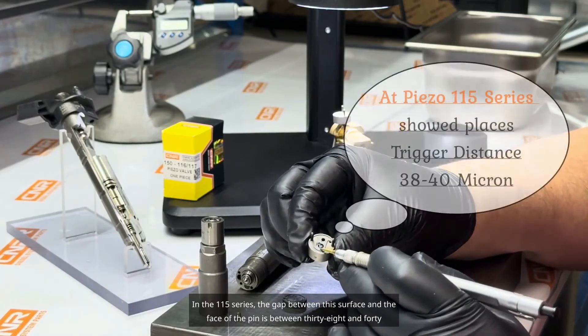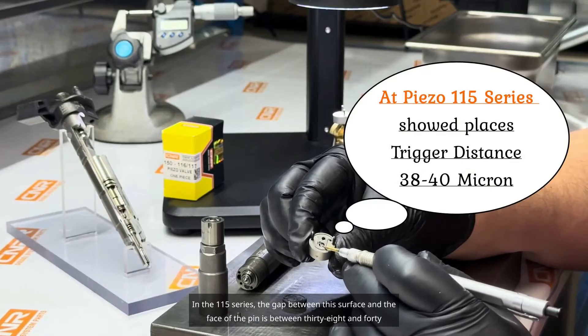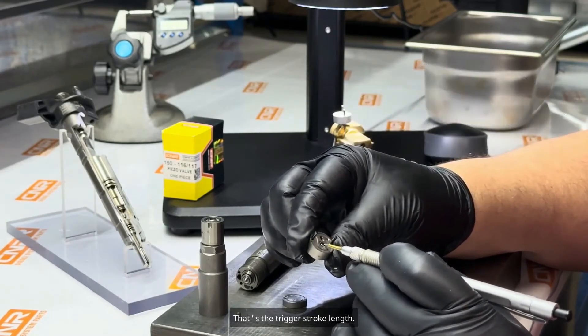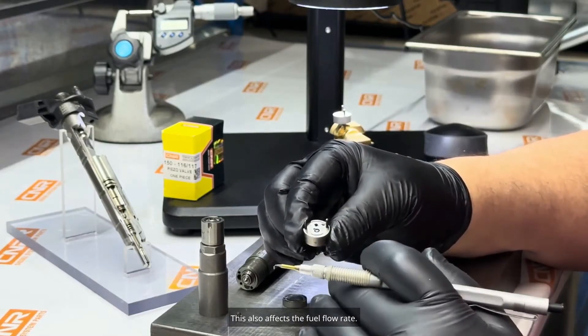In the 115 series, the gap between the surface and the face of the pin is between 38 and 40 microns. That's the trigger stroke length, the distance, the opening and closing stroke length. This also affects the fuel flow rate.